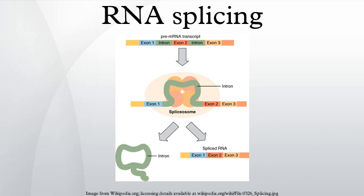Experimental manipulation of splicing: Splicing events can be experimentally altered by binding steric blocking antisense oligos such as morpholinos or peptide nucleic acids to snRNP binding sites, to the branch point nucleotide that closes the lariat, or to splice regulatory element binding sites.